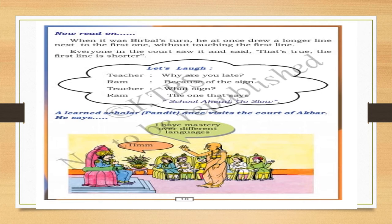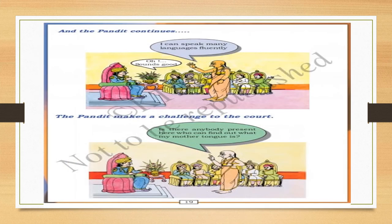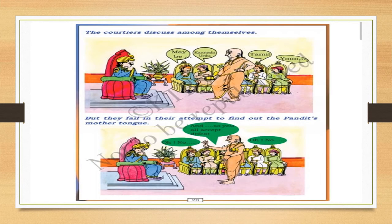Open your textbook to page number 18. A lone scholar, a Pandit, once visited the court of Akbar. He said: I have mastery over different languages. I can speak many languages fluently. The Pandit made a challenge to the court: is there anybody present here who can find out what my mother tongue is? The courtiers discussed among themselves — maybe Kannada, Urdu, Tamil — but they failed in their attempt to find out the Pandit's mother tongue, and so all accepted defeat.